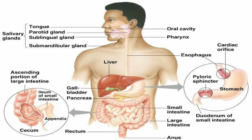Saliva contains an enzyme — a chemical which helps convert complex particles into simpler versions. The enzyme in saliva is called amylase, and its function is to convert the starch present in food into glucose. The liver secretes bile juice, which converts fats into fatty acids. Finally, the pancreas also secretes digestive juices that convert remaining food particles into their simpler form in the small intestine.